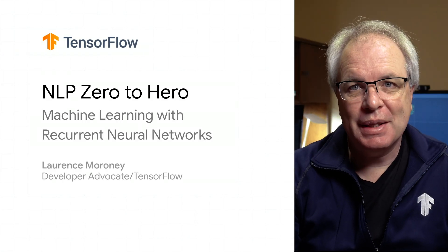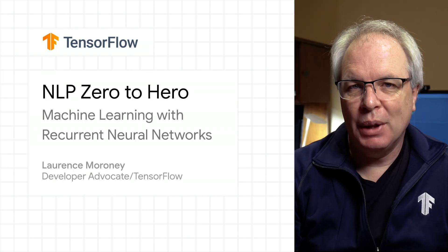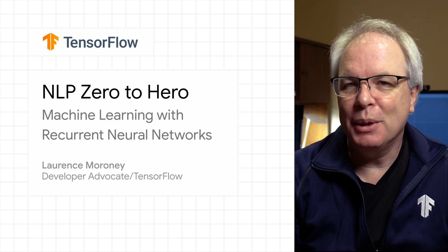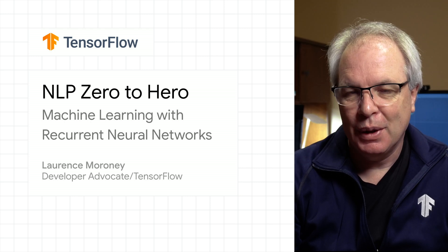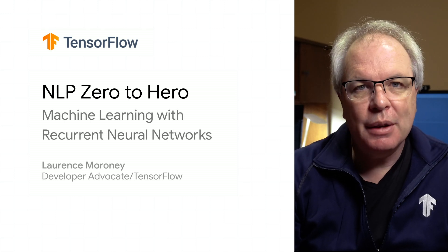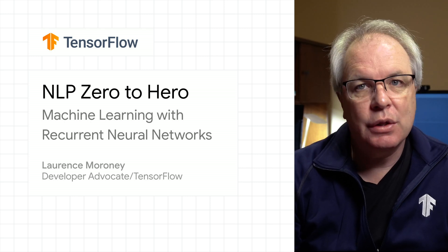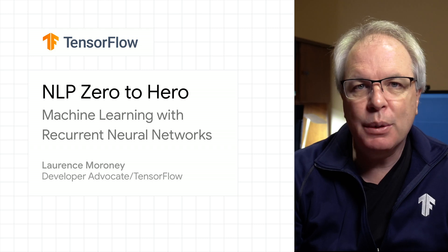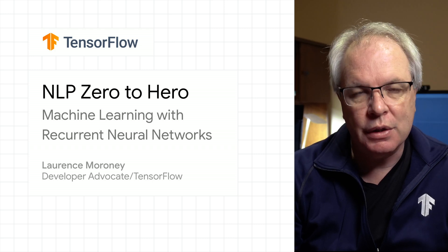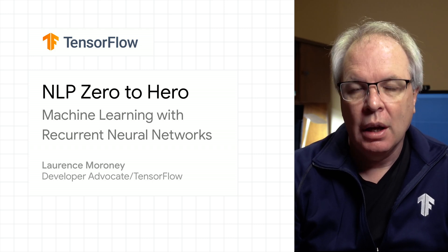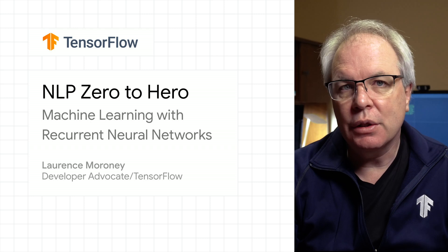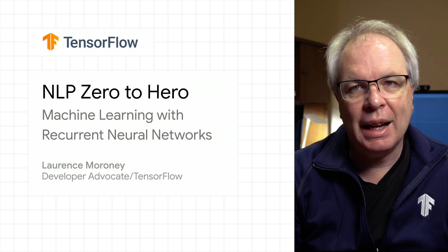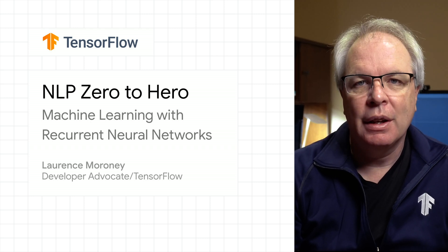Hi, and welcome to this episode in Natural Language Processing Zero to Hero with TensorFlow. In the previous videos in this series, you saw how to tokenize text and how to use sequences of tokens to train a neural network. In particular, you saw how to create a neural network that classified text by sentiment.